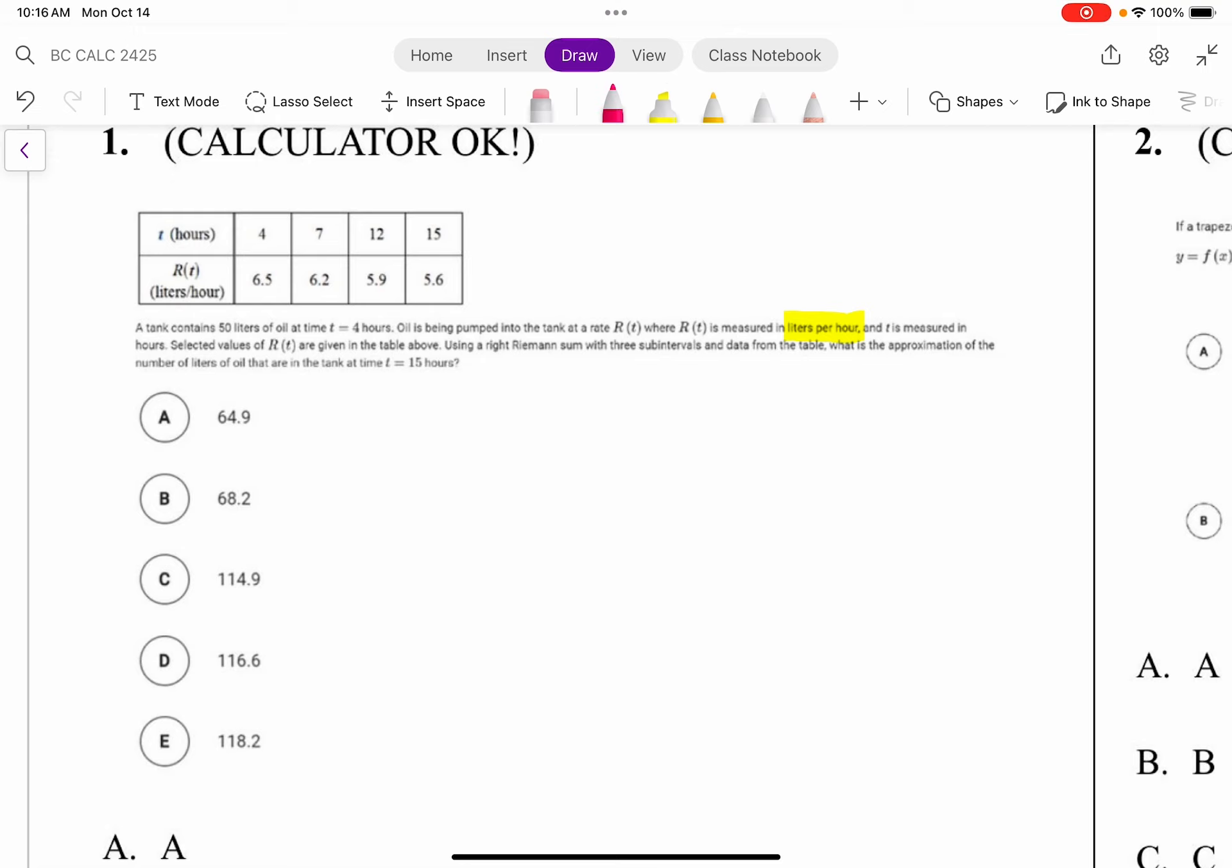So generically speaking, we know that the amount of oil at t equals 15 is going to equal the amount of oil at t equals 4